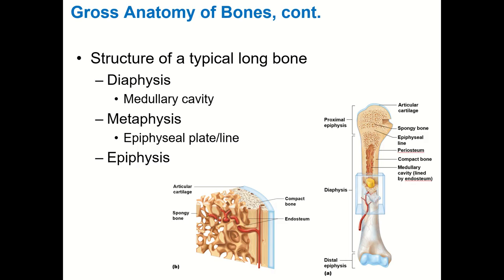The metaphysis is the widened area between the diaphysis and the epiphysis — on the humerus distally, that's where the medial and lateral supracondylar ridges are, where the bone flares. The metaphysis is important because that's where your epiphyseal plate — your growth plate — is located. Before skeletal maturity the growth plate is hyaline cartilage, and that's how long bones grow in length. Skeletal maturity is approximately age 21 in men and age 18 in women.